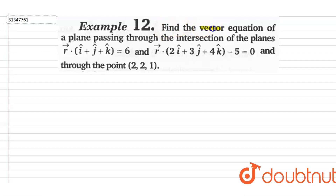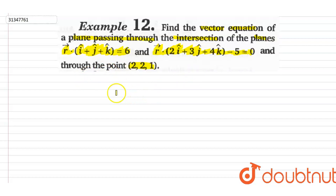Hi guys, my question is: find the vector equation of a plane passing through the intersection of the planes r-vector dot (i-cap plus j-cap plus k-cap) equals 6, and r-vector dot (i-cap plus 3j-cap plus 4k-cap) minus 5 equals 0, and through the point (2, 2, 1). I am going to get a plane equation that passes through the intersection of these planes and this point.